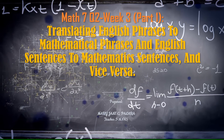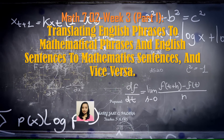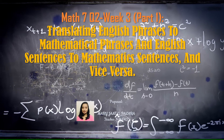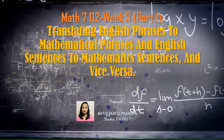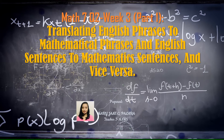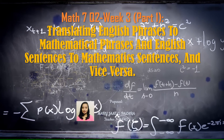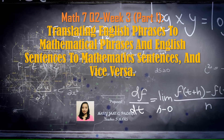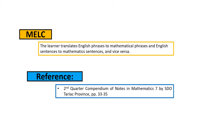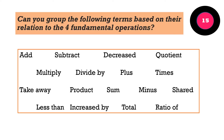Hi students, we are now on the third week of our discussion for second quarter in Mathematics 7. For part 1, we will be discussing translating English phrases to mathematical phrases and English sentences to mathematical sentences. Here is our most essential learning competency as well as our reference.